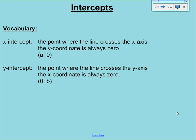The x-intercept is defined as the point where a line crosses the x-axis. Remember that the x is the horizontal axis. Now, if you think about the coordinate plane, if you're anywhere on the x-axis, the y-coordinate is always 0.